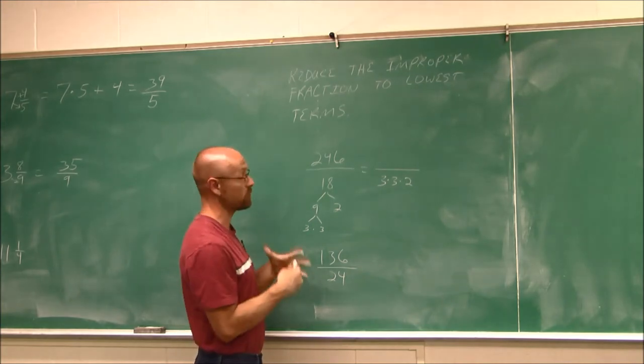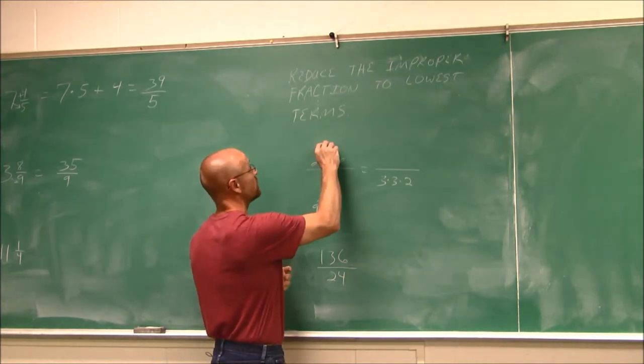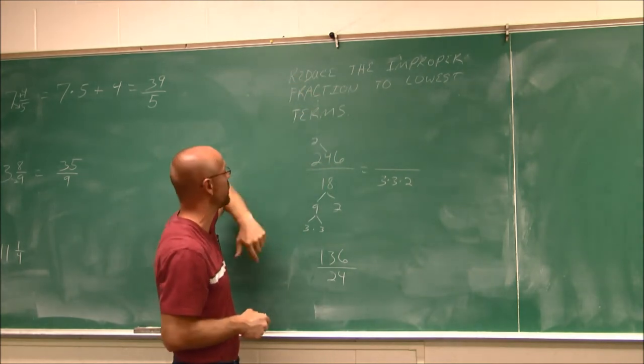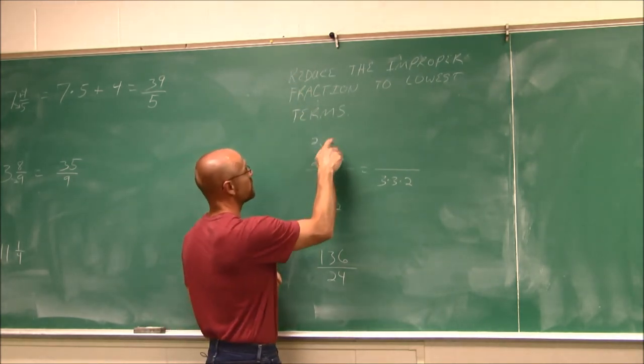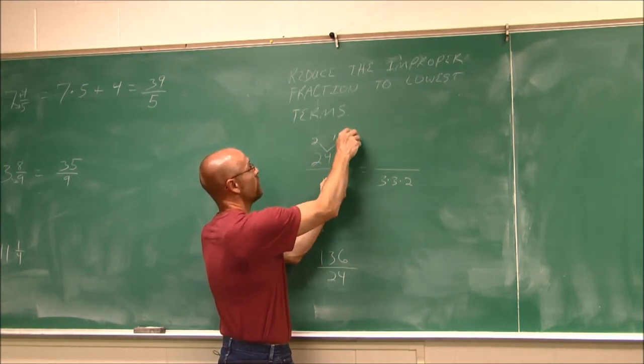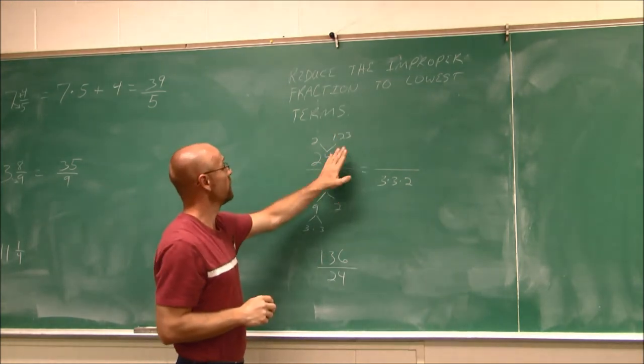And 246. Well, that's a larger number. So I'm just going to take it down a little piece at a time. And I'm going to do a reverse factor tree. It's just going to be upside down. 2 goes into this once, twice, three times.